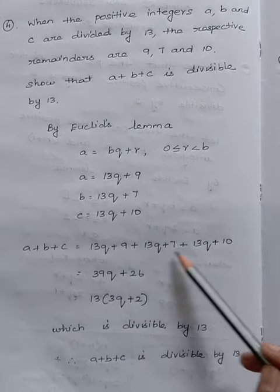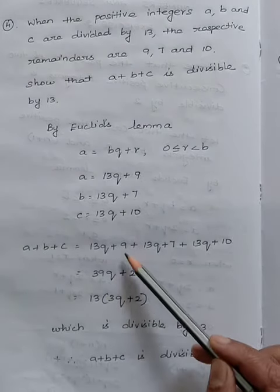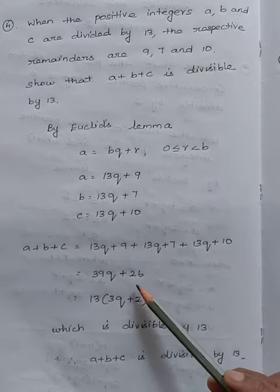13q plus 13q plus 13q gives 39q, and 9 plus 7 plus 10 equals 26.